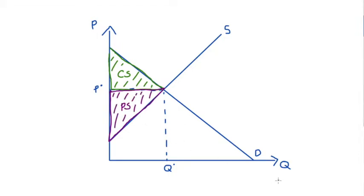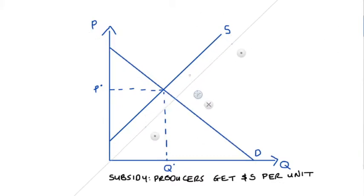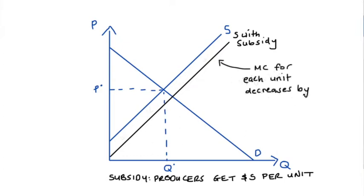If we place a subsidy on the producers in this market — a per unit subsidy — so that every time a producer sells some quantity the producer gets s dollars per unit from the government, this is going to affect their supply curve. In particular, our supply curve is going to shift down by exactly the amount of the subsidy s. This comes from the fact that the supply curve comes from the marginal cost curve, and the government giving producers s dollars per unit effectively lowers the marginal cost of each unit.